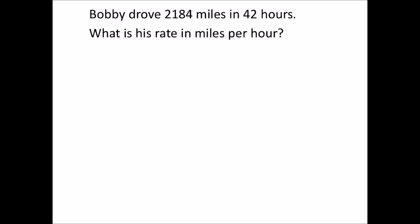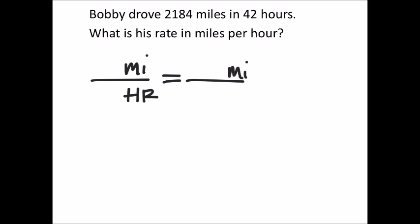Alright, what is his rate in miles per hour? Bobby drove 2,184 miles in 42 hours — let's see what his rate is. So first I'm going to set this up as a proportion. We're comparing miles and hours, so for both fractions I'm just going to label miles in the numerator and hours in the denominator. What we want here is to know how many miles for one hour.